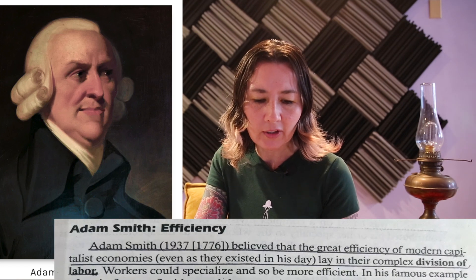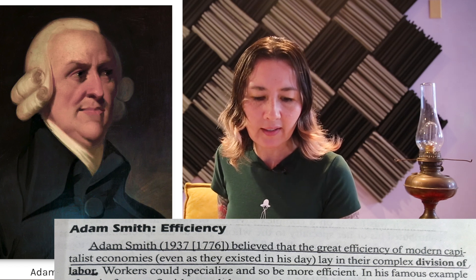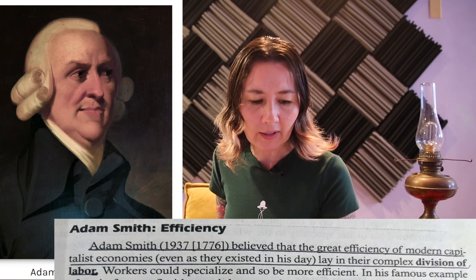The first theorist discussed is Adam Smith, whose focus for this chapter is efficiency. The author states that Smith believed the great efficiency of modern capitalist economies lay in their complex division of labor. However, Smith did caution that if capitalists colluded, they would push this to the extreme, maximizing efficiency while squeezing out the most work at the cheapest cost from their labor supply.